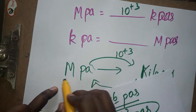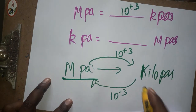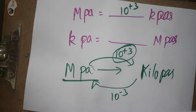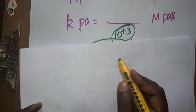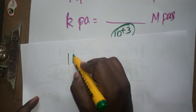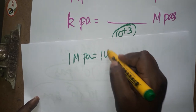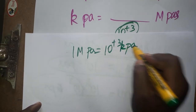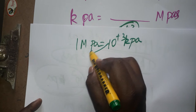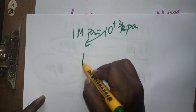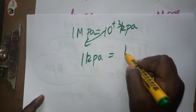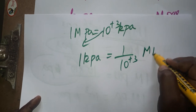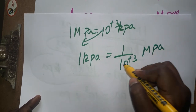So megapascal to kilopascal is 10 to the power of plus 3. Now for the opposite: kilopascal to megapascal. Since 1 megapascal equals 10³ kilopascals, we bring the kilopascal term to the denominator using cross multiplication.